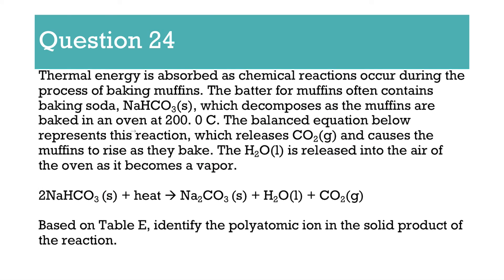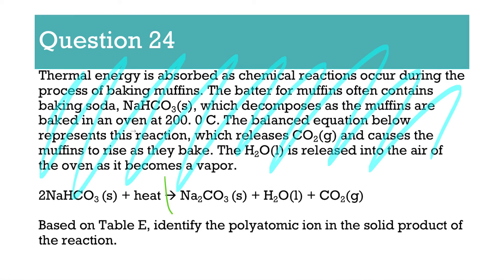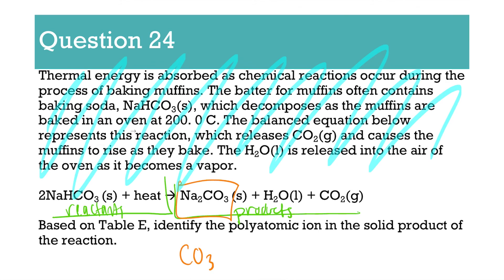Number 24 gives a lovely paragraph about baking muffins — doesn't matter. All that matters is it says, based on table E, identify the polyatomic ion in the solid product of the reaction. Everything before the arrow is your reactants, everything after is your products. Of those products, identify which one is a solid. Then based on table E, what polyatomic ion is in that formula? You could say CO3, or you could write carbonate — either the formula or the name is fine. You could also write CO3 with a negative 2 charge. No need to overcomplicate it.